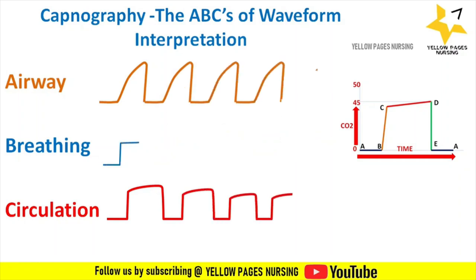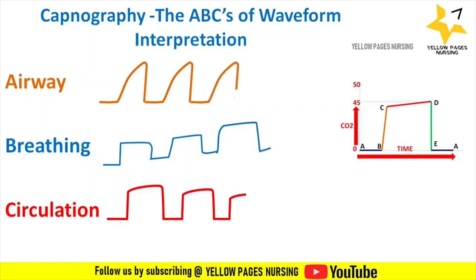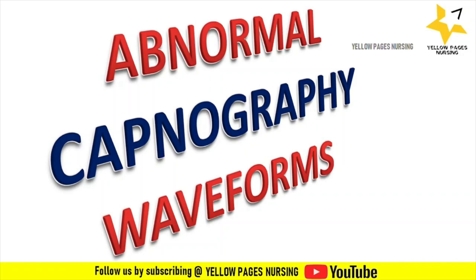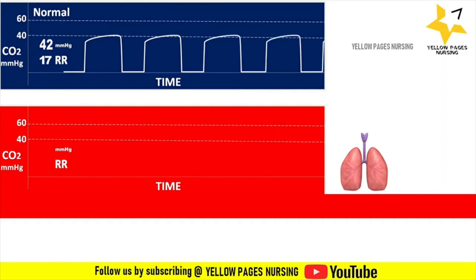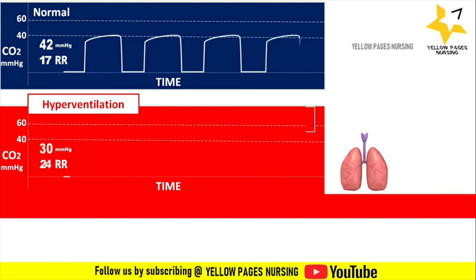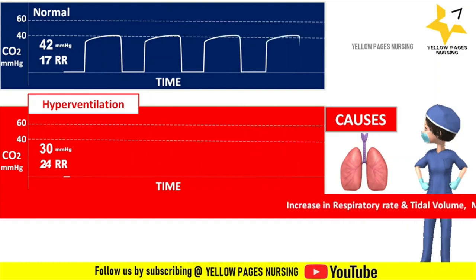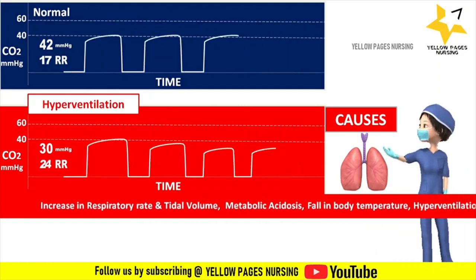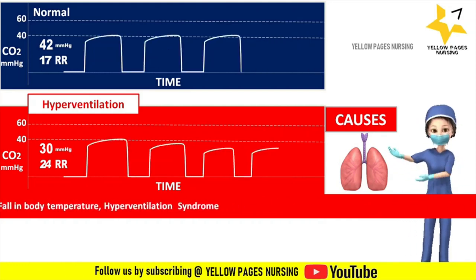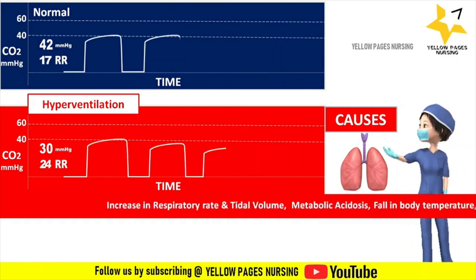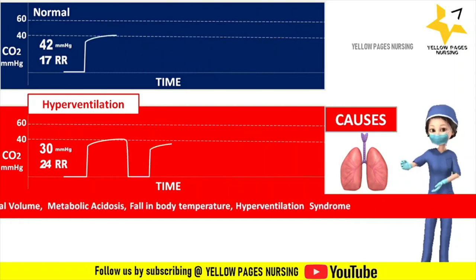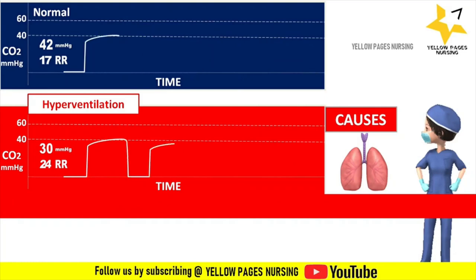The normal capnography waveform has all phases within normal limits with an EtCO2 value of 42 mmHg, within the normal range of 35–45 mmHg. In hyperventilation, the EtCO2 reading is initially normal, but as respiratory rate increases the EtCO2 drops and the waveform becomes narrower. Causes of hyperventilation include increased respiratory rate and tidal volume, metabolic acidosis, fall in body temperature, pulmonary embolism, and hyperventilation syndrome.